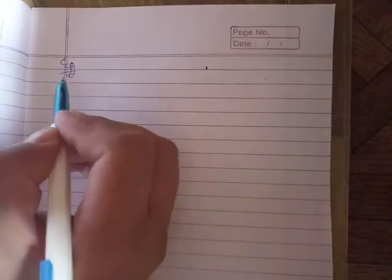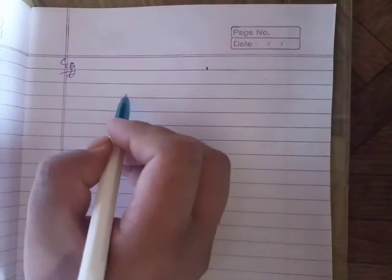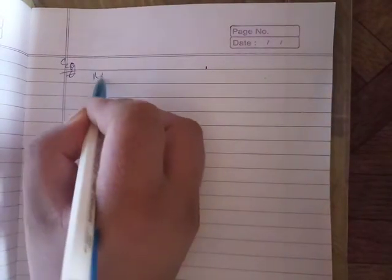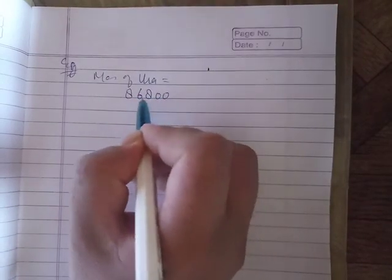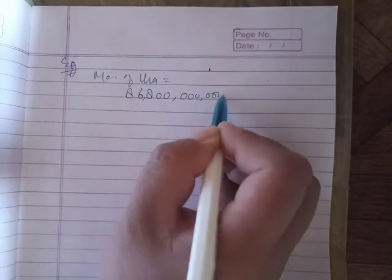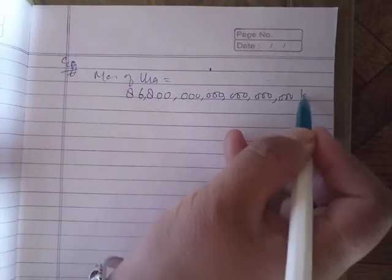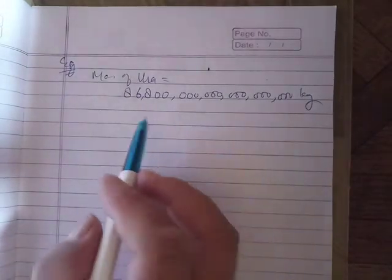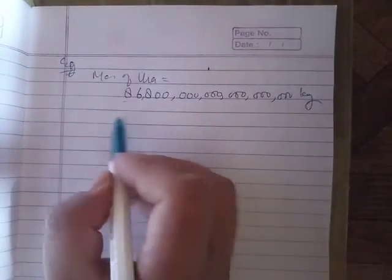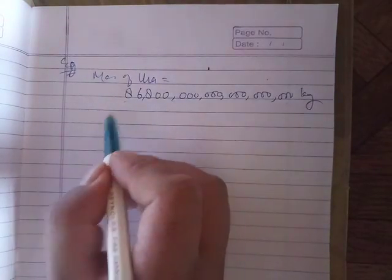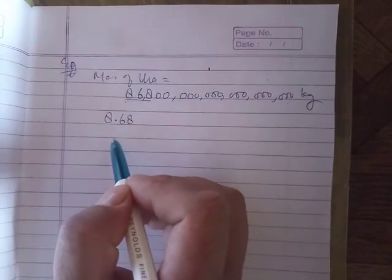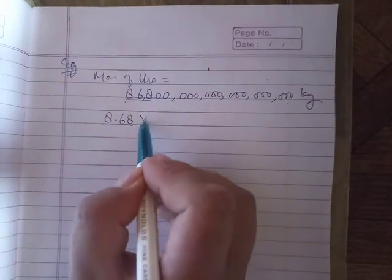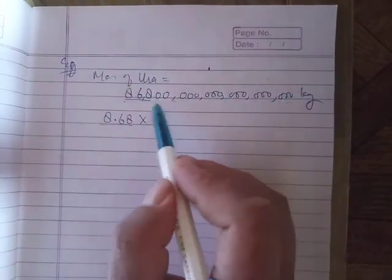More examples: for large numbers, the mass of Uranus is 86800. This is a large number. To write it in standard form, we write 8.68 - put the decimal point after the first digit. We need the number between 1 and 10, so 8.68.